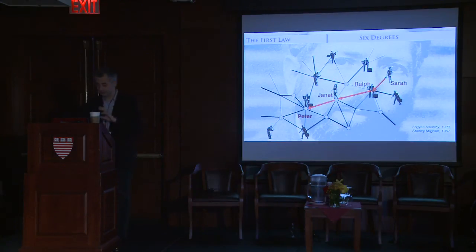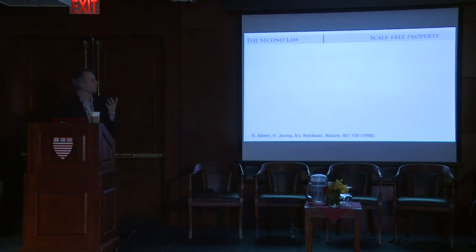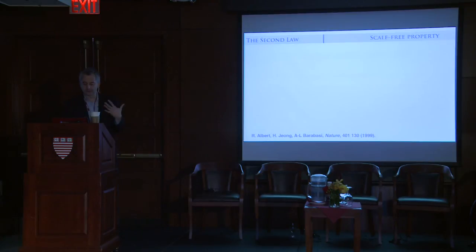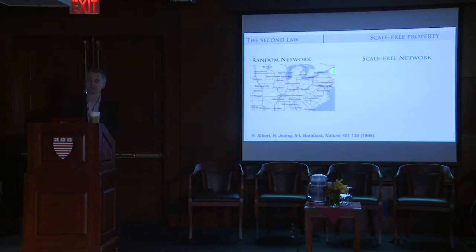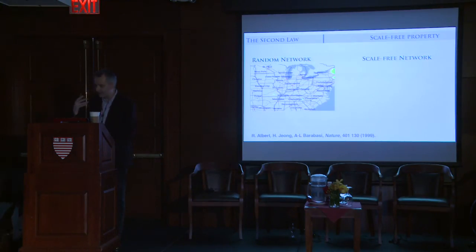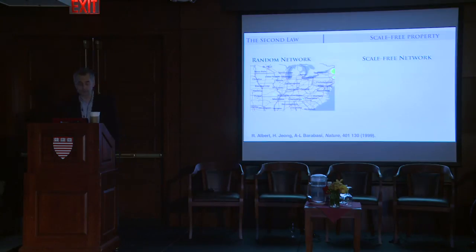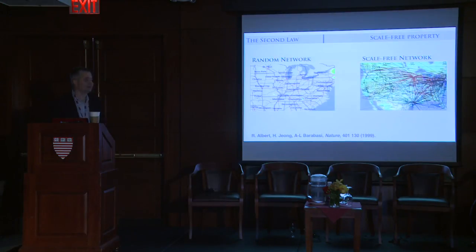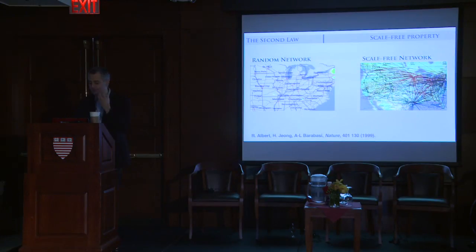There's another key feature of networks equally important: what we call the scale-free property. A random network is a bit like the US highway system, where nodes are cities and links are highways — a relatively uniform network where most cities have two or three highways going in and out, with no city having hundreds of highways and none having fewer than a few. In contrast, most real networks look like the airline system, where there are many small airports and a few major hubs holding many nodes together.